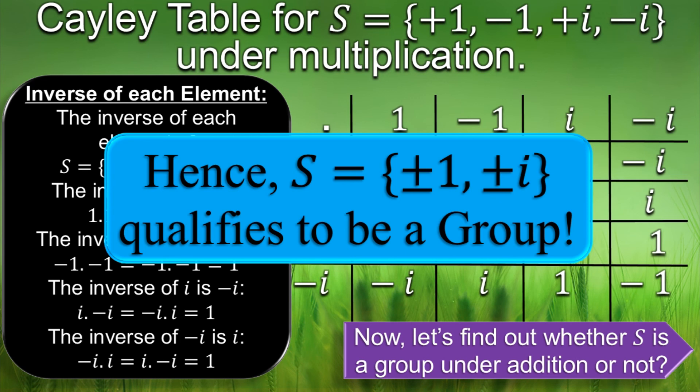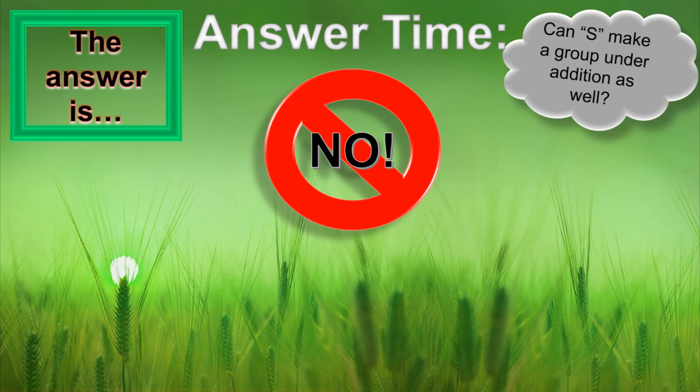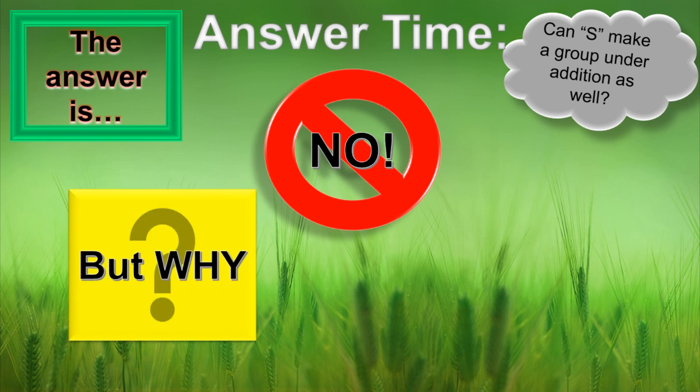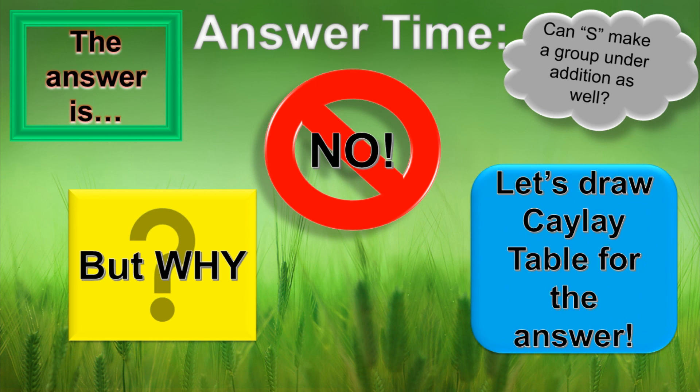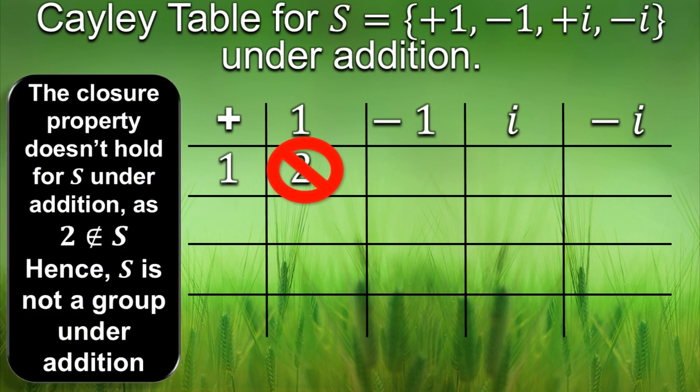So the answer is absolutely no. But why? If you haven't figured it out then let's draw its Cayley table. They say when in doubt draw a Cayley table. No, no, no they're not. So as we started making the table, you can see immediately that S is not closed under addition as 1 plus 1 equals 2 does not belong to S. So S is not a group under addition.